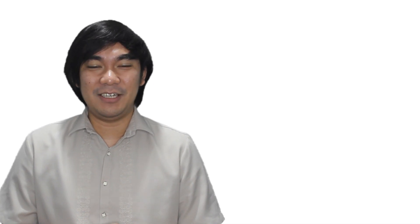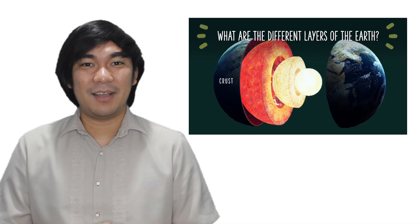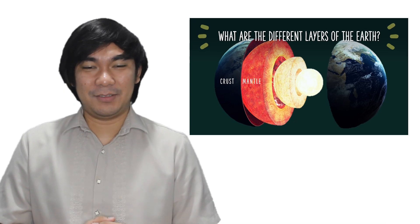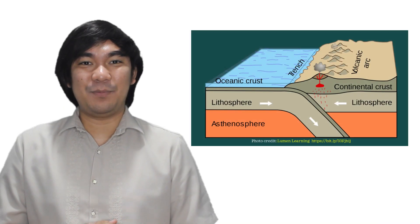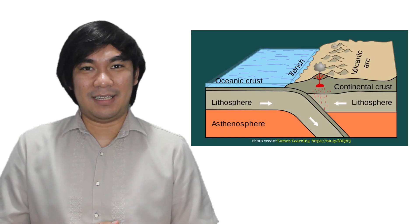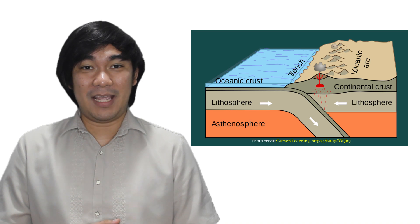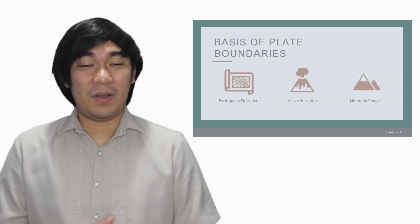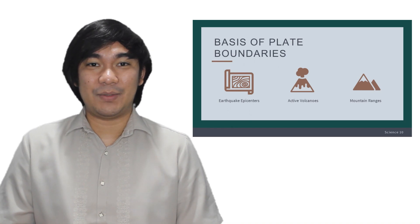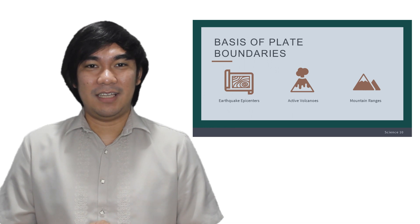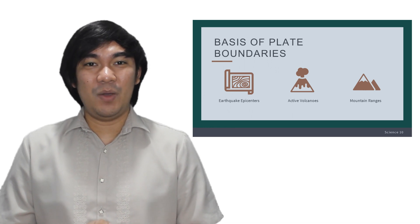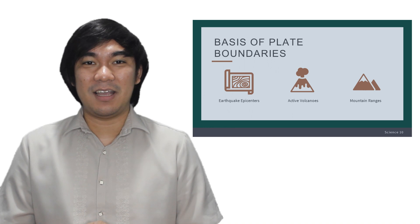To sum up, the different layers of the Earth are the crust, mantle, outer core, and inner core. The lithosphere is composed of crust and upper mantle and is used to explain different geologic processes. The locations of earthquake epicenters, volcanoes, and mountain ranges are not scattered — they are found at certain places, which are the plate boundaries.